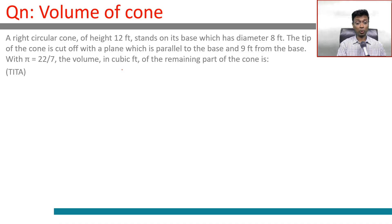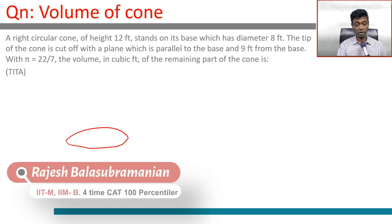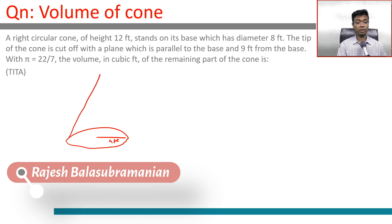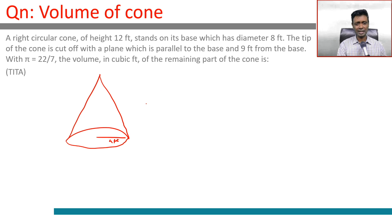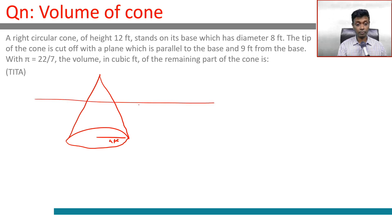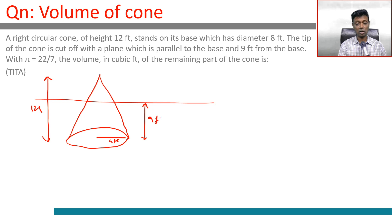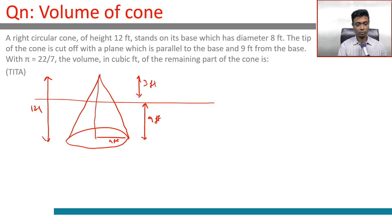A right circular cone of height 12 feet stands on its base, which has a diameter of 8 feet — so radius of 4 feet, height of 12 feet. The tip of the cone is cut off by a plane parallel to the base and 9 feet from the base. The overall height is 12 feet, and cutting 9 feet from the base leaves a remaining height of 3 feet.